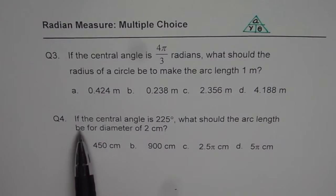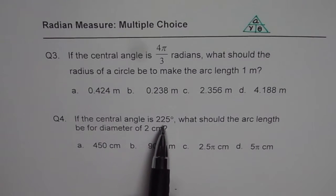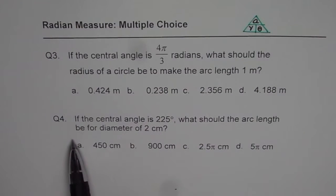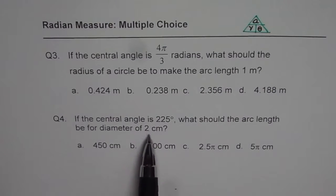Question number 4 is, if the central angle is 225 degrees, what should the arc length be for diameter of 2 centimeter? You can pause and then find the answer for these questions.